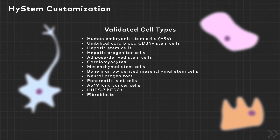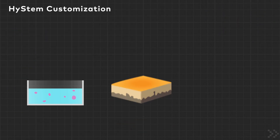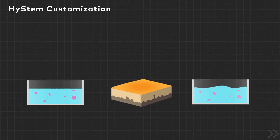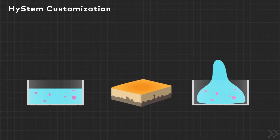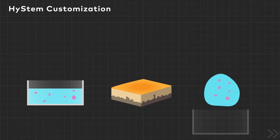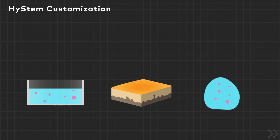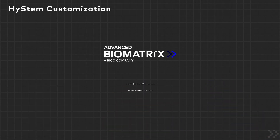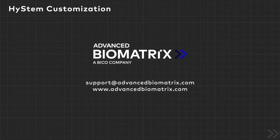Hystem is useful for 3D cell culture, tissue models, or as a carrier for cell or drug delivery. Join the paradigm shift of 3D cell culture and visit us at AdvancedBioMatrix.com to learn more.